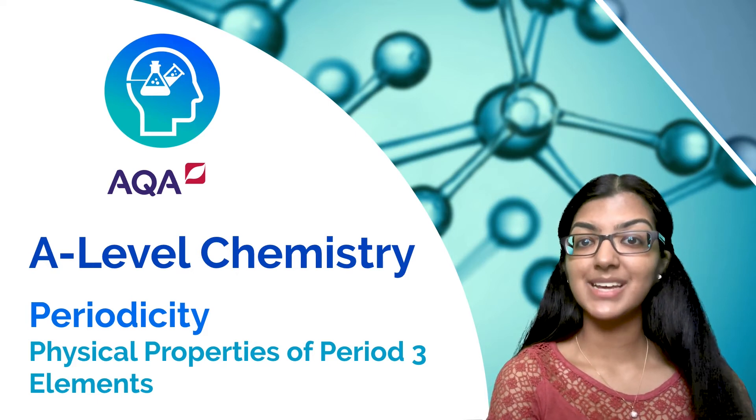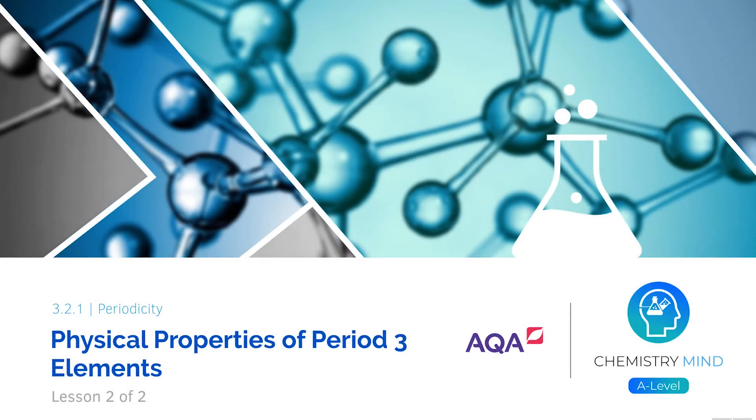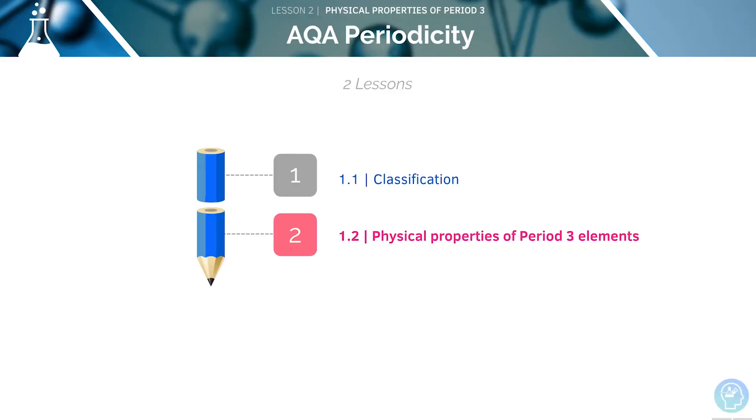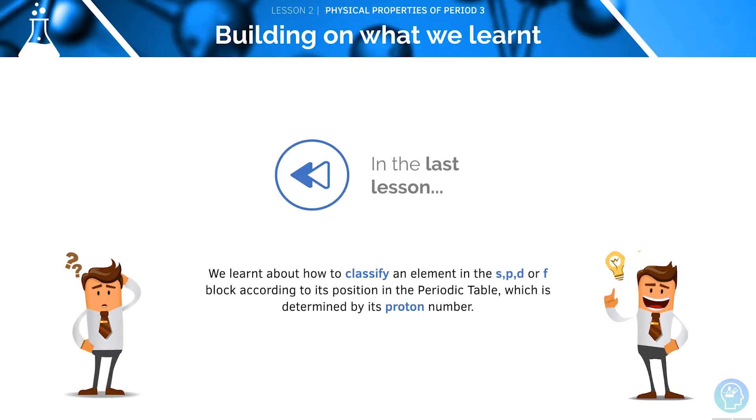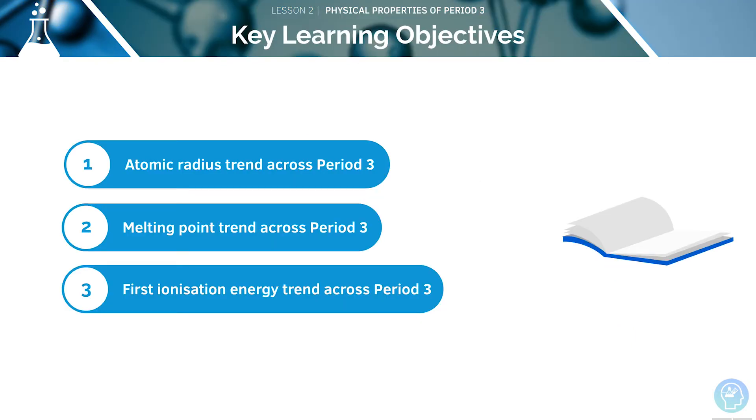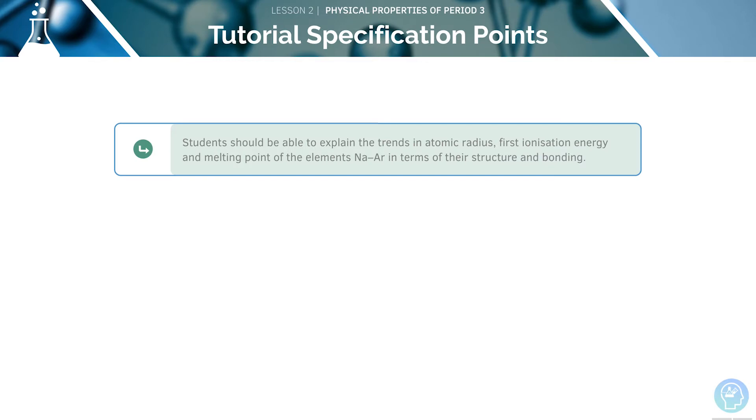We also have helpful timestamps to guide you through the video. Welcome to Lesson 2 of 2 in this tutorial, covering the physical properties of the Period 3 Elements. This is our second video in our series of two lessons on the topic of periodicity. In the last lesson, we learnt about classifying elements according to their position on the periodic table. Here are the key learning objectives for today's lesson. First, we will look at the atomic radius across Period 3, then at the trends in melting point and first ionisation energy across it. Here is the AQA specification point for today's lesson. We need to be able to discuss the elements from sodium to argon in terms of their structure and bonding.